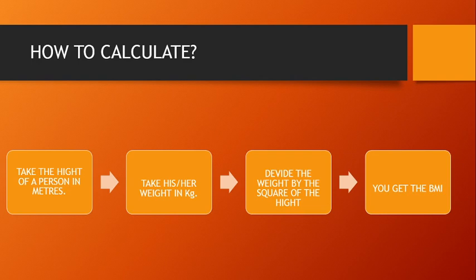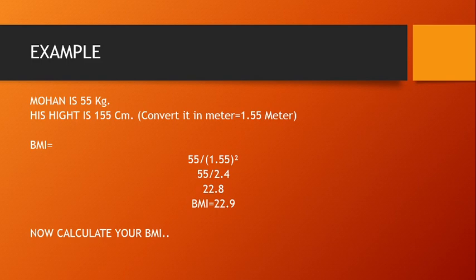इसे एक example से समझते हैं। Mohan का weight 55 kg है और उसकी height 155 cm है। Height measure करने के कई तरीके हैं — feet में, centimeter में — लेकिन हमें यहाँ meter में चाहिए। तो 155 cm को convert करते हैं: यह 1.55 meter हो जाता है। अब हमारे पास दोनों data available हैं।